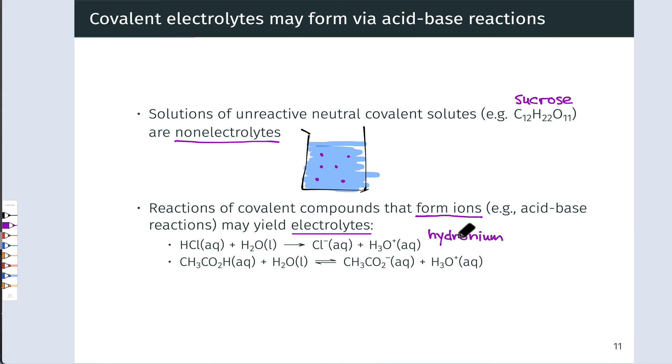For this reason, a solution of HCl in water is an electrolyte. And this happens to a complete degree. This reaction occurs 100% in the forward direction, making HCl solutions strong electrolytes. All of the dissolved HCl is in the form of H3O plus and Cl minus.